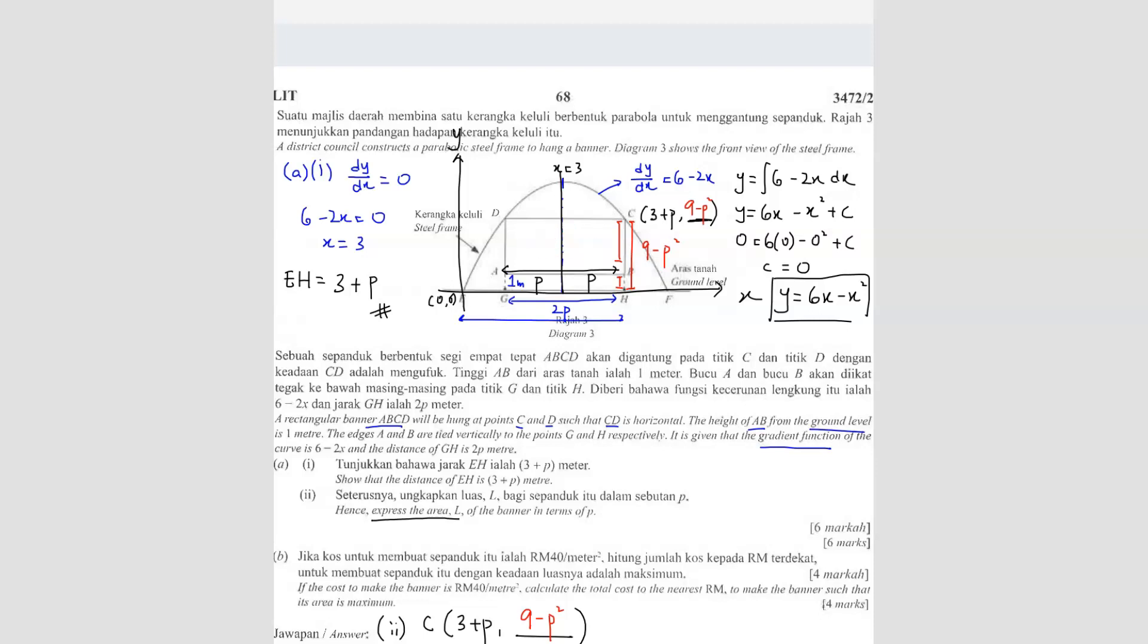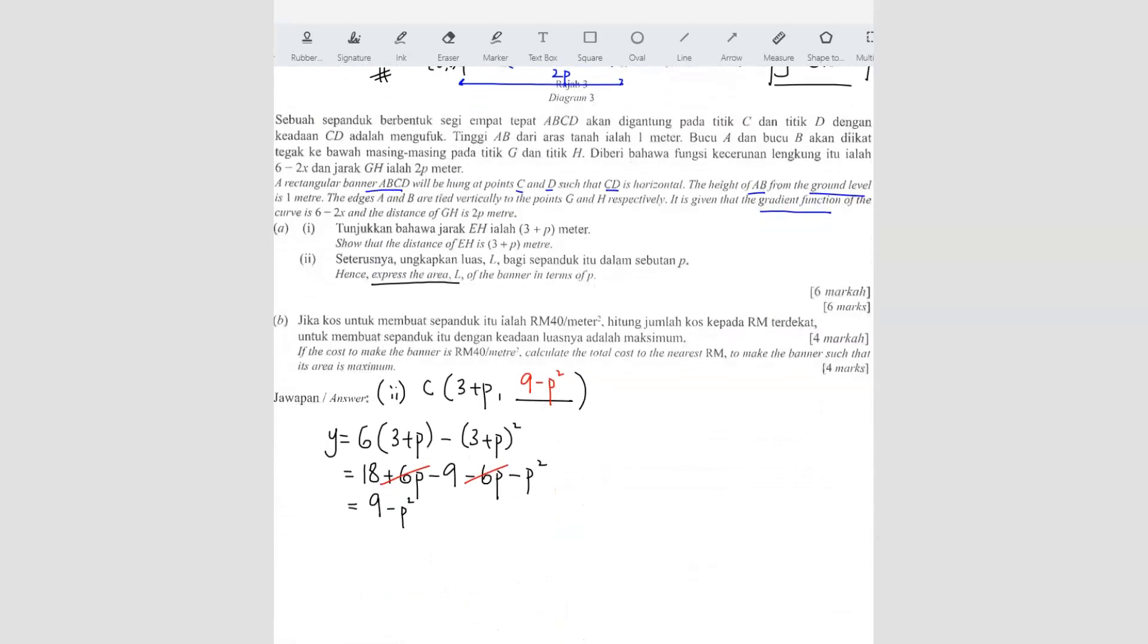So if we just want to find this, we have to take 9 minus p squared minus the 1 meter down there. Because we know the height is 1 meter. So we can find the area already. Length times width. So the area, let me write here. The area, I use L because they give L, right? So area L equals to length is 2p times the height. Height is 9 minus p squared and then you must minus 1 meter. So I get 2p times 8 minus p squared. So I get 16p minus 2p cubed. So this is your answer.